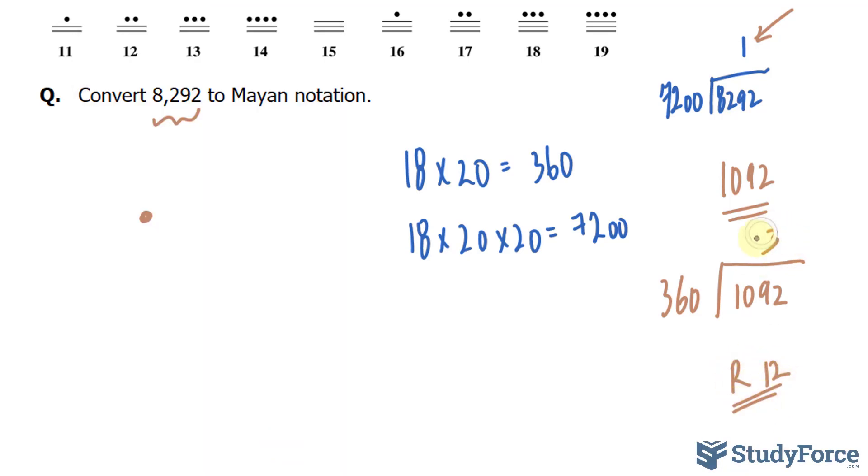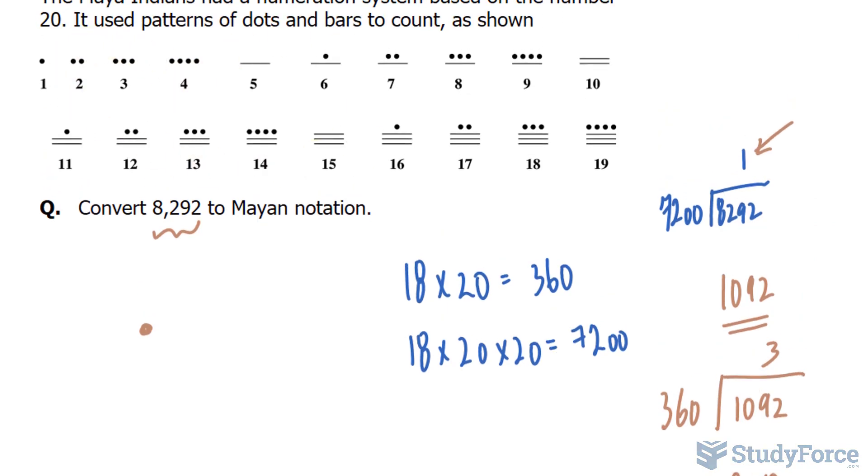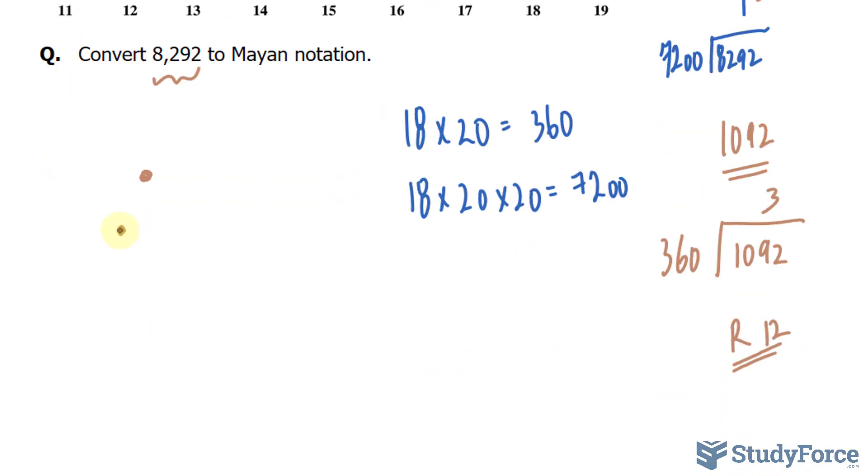So to represent 3, we look at this chart, and we will have 3 pebbles. So this part right here is 18 times 20 to the power of 2. Here we have 18 times 20 to the power of 1. The second row from the bottom is the 20s.